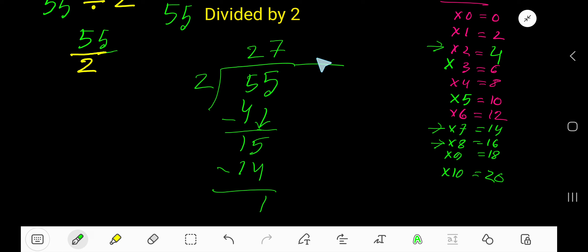To write your answer in decimal form, take here decimal point, then 0. Bring down the first 0. So 2 goes into 10 how many times? 5. 2 goes into 10, 5 times.